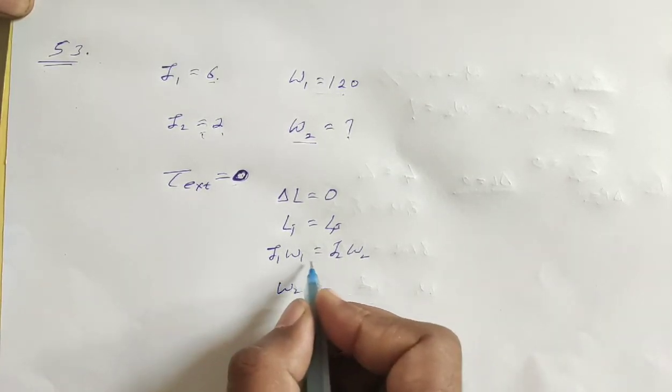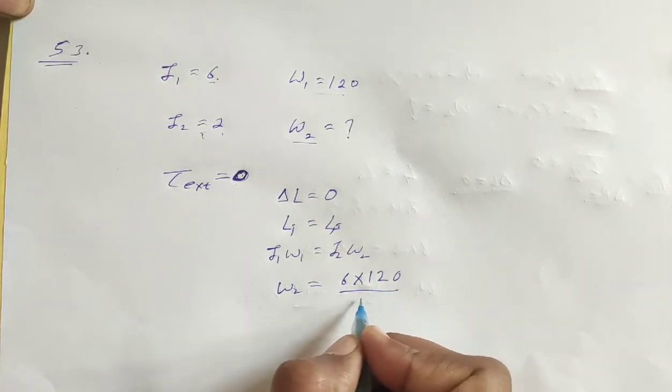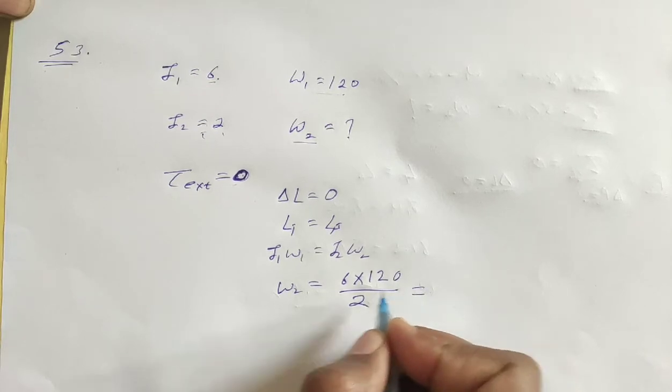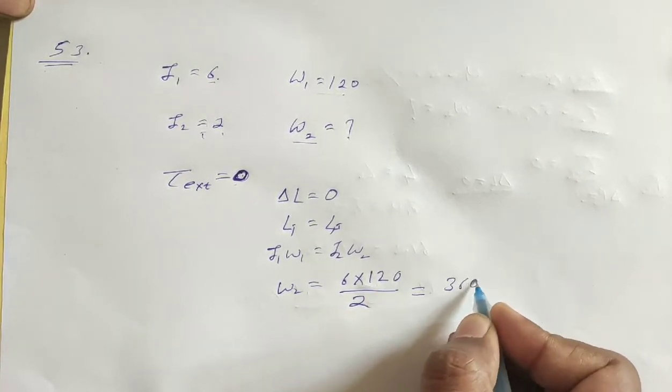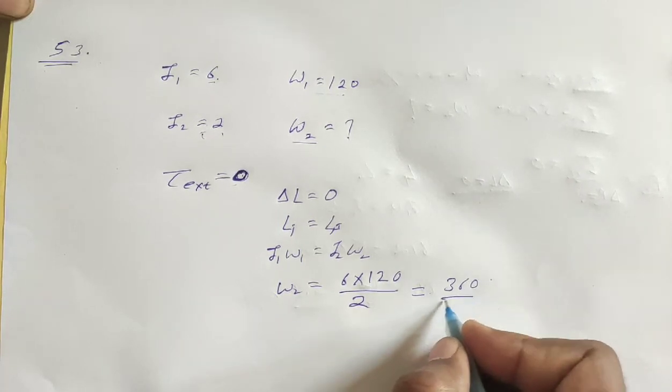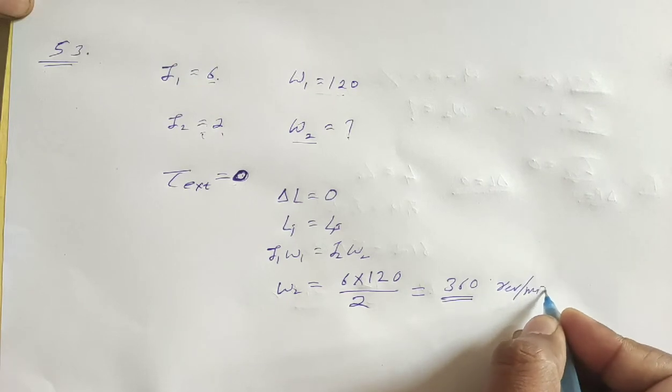Omega 2 is equal to I1 omega 1 over I2. What is I1 omega 1? I1 is 6, omega 1 is 120, and this is 2. So how much is it? 3 into 120. 360. This is speed, which is revolutions per minute.